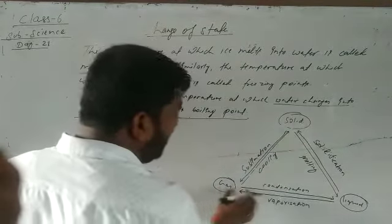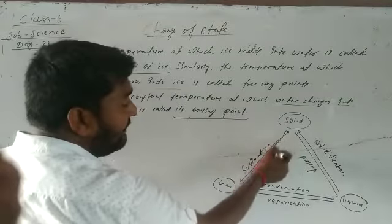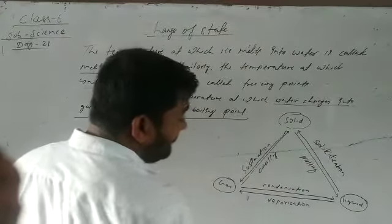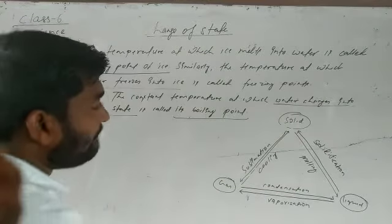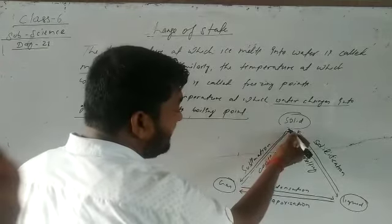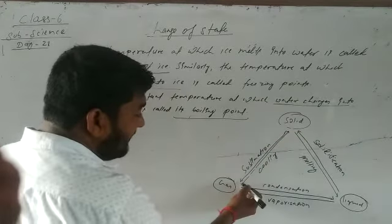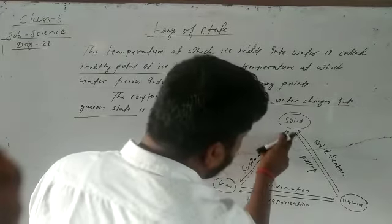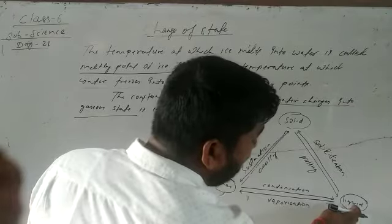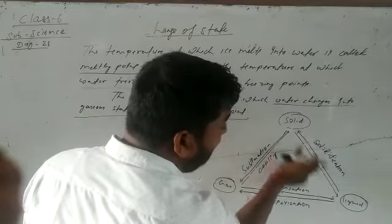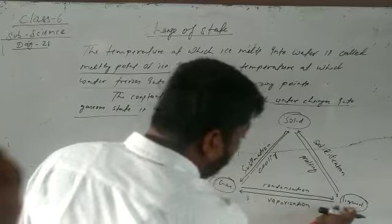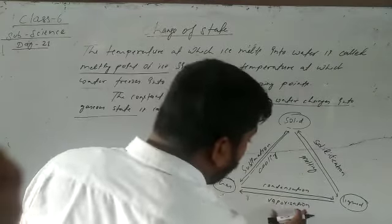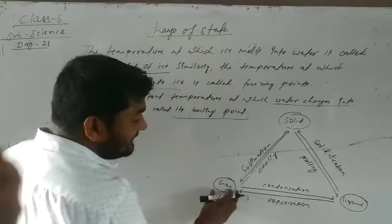See the chart here. This is solid, this is liquid, this is gas. From solid, when it melts, it becomes liquid. Then vaporization — when vapor comes, it turns into gas.